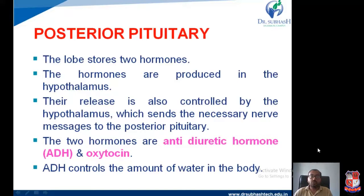The posterior lobe stores two hormones. Remember: it does not form or produce any hormones itself. It just stores two hormones — antidiuretic hormone and oxytocin — because these two hormones are synthesized in the hypothalamus and then passed to the posterior pituitary gland for further use as needed.